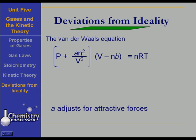Now, A adjusts for the attractive forces between these molecules, and B adjusts for the size of the molecules. And you will find those constants in a table in your textbook.